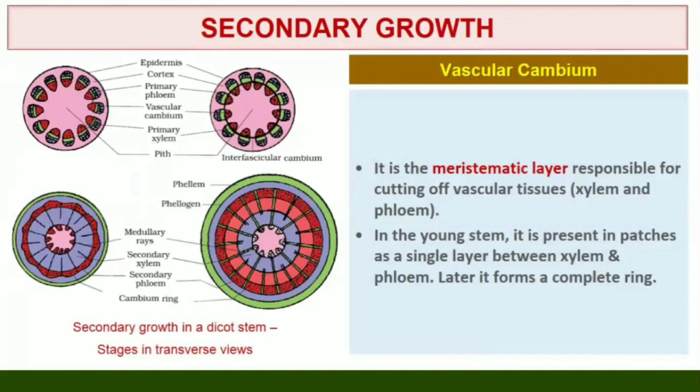Vascular Cambium. The meristematic layer that is responsible for cutting off vascular tissues, xylem and phloem, is called vascular cambium. In the young stem it is present in patches as a single layer between the xylem and phloem. Later it forms a complete ring.